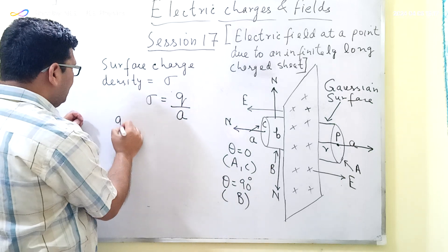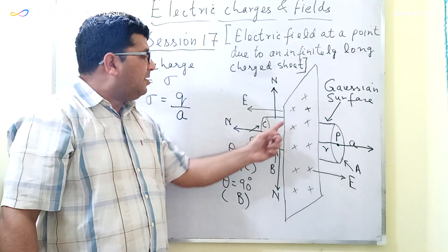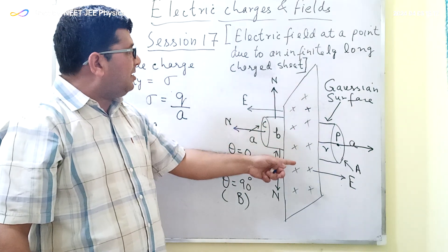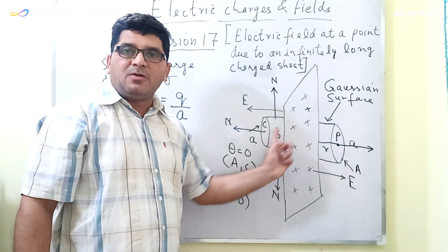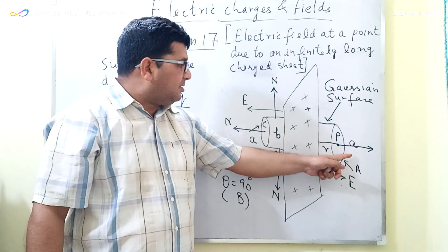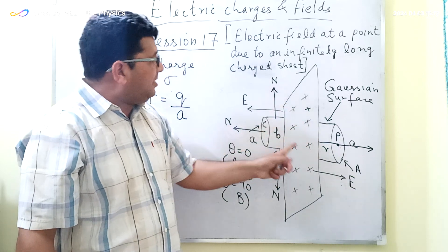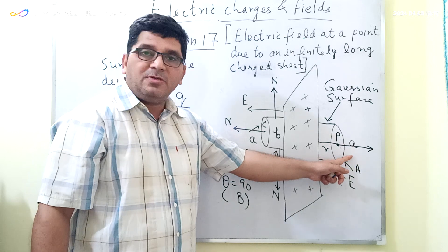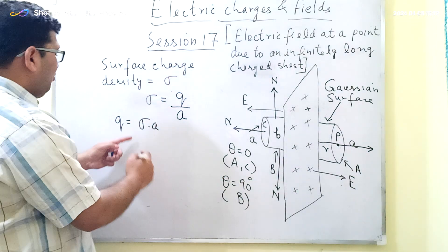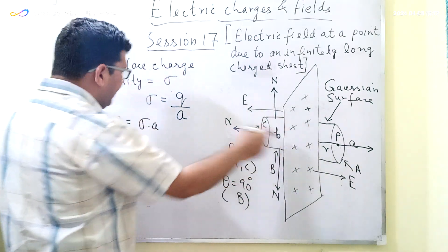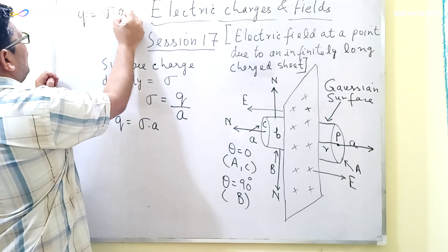The charge enclosed by the Gaussian surface, Q, equals Sigma times A, where A is the area of the infinitely long charge sheet enclosed by the Gaussian surface. Since the cross-sectional area of surfaces A and C is small A, the enclosed area of the charge sheet is also A. Therefore, the total enclosed charge Q equals Sigma times small A.